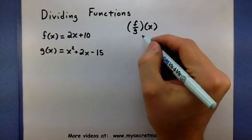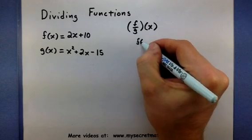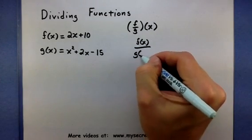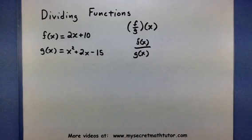So here's what that alternate notation looks like. It says you're going to take your entire function f and divide by your entire function g. Now don't worry, even though that notation doesn't look the same, it actually means the same as the original.